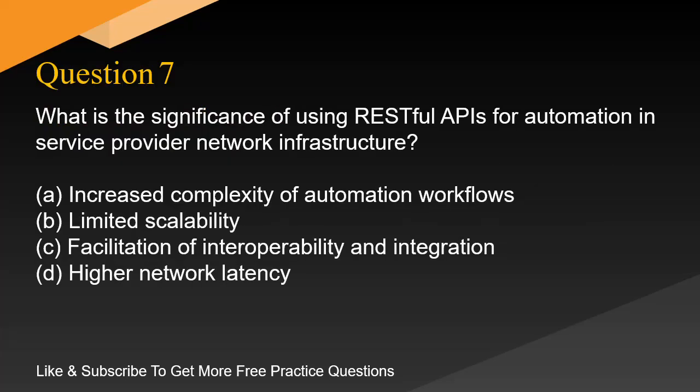Question 7. What is the significance of using RESTful APIs for automation in service provider network infrastructure? A. Increased complexity of automation workflows. B. Limited scalability. C. Facilitation of interoperability and integration. D. Higher network latency.